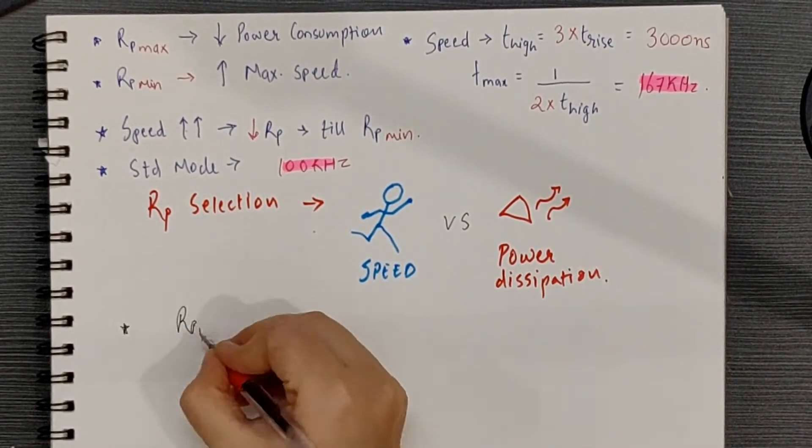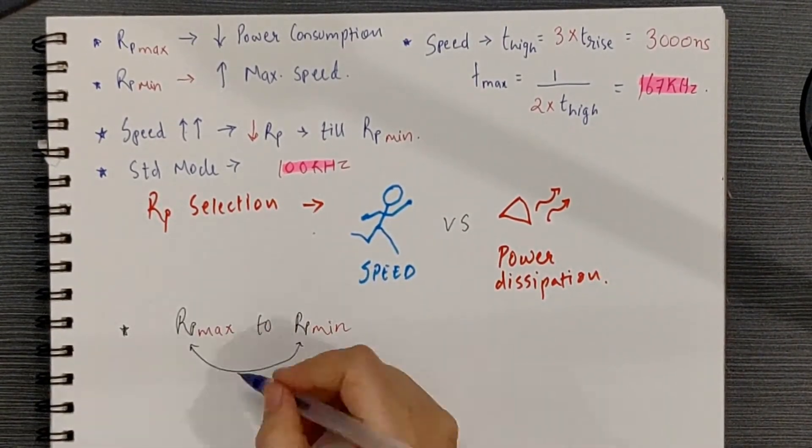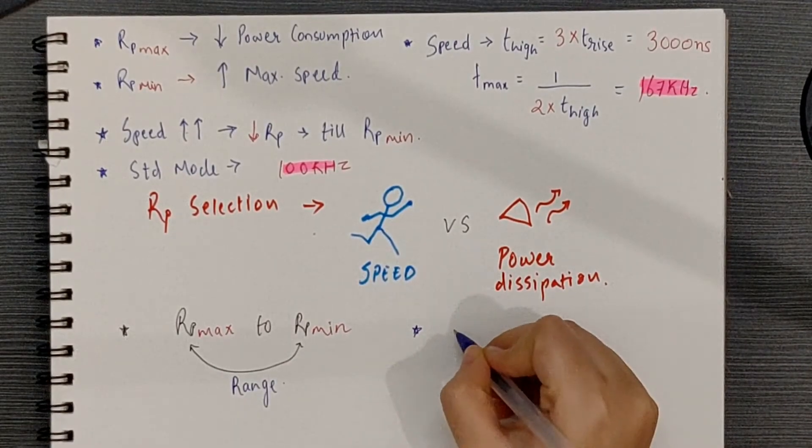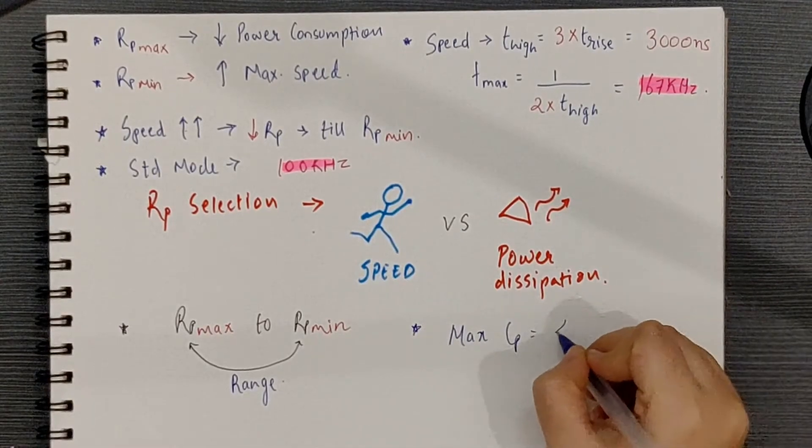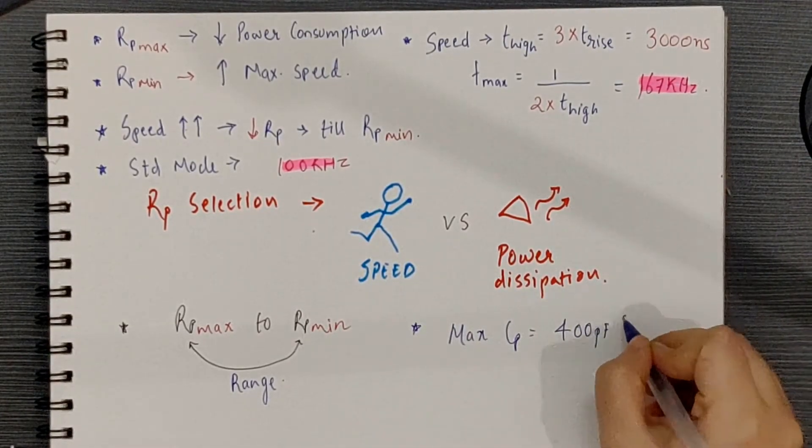You can swap in different resistors and settle for a reasonable value. I2C specification also puts a limit on the maximum capacitance and the value for that is 400 pF in standard mode.